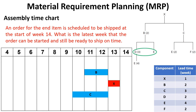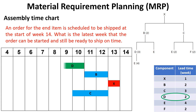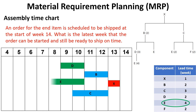In the next level in the product tree, items D and E are required for the assembly of subassembly B. The lead time for item D is two weeks, so going backward from week 11 start by two weeks means that the order of item D must be released at the beginning of week 9. For item E, its lead time is four weeks, so going backward from week 11 start by four weeks means that the order of item E must be released at the beginning of week 7.